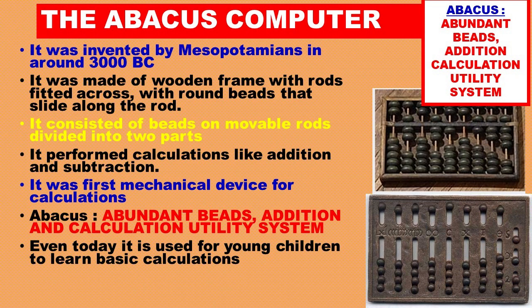The Abacus Computer. It was invented by Mesopotamians in around 1300 BC. It was made of a wooden frame with rods fitted across with round beads that slide along the rod. It consisted of beads on movable rods divided into two parts. It performed calculations like addition and subtraction. It was the first mechanical device for calculations.